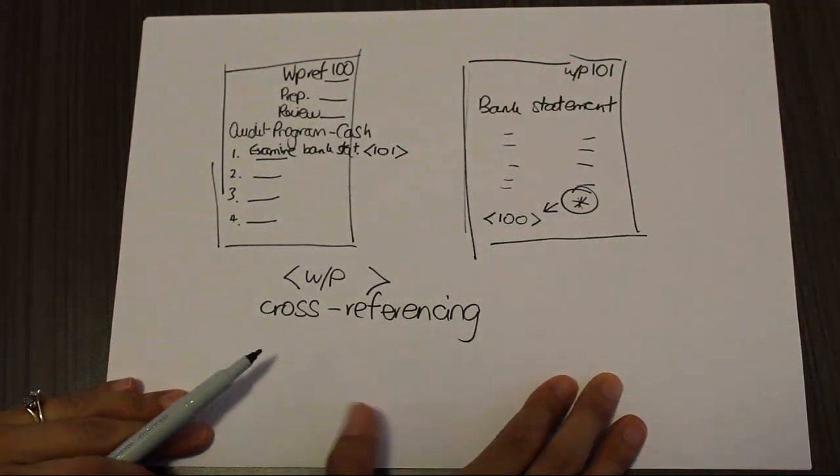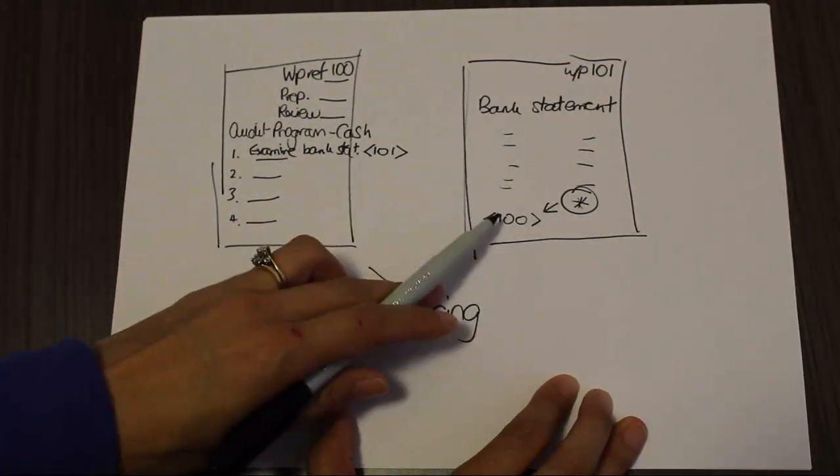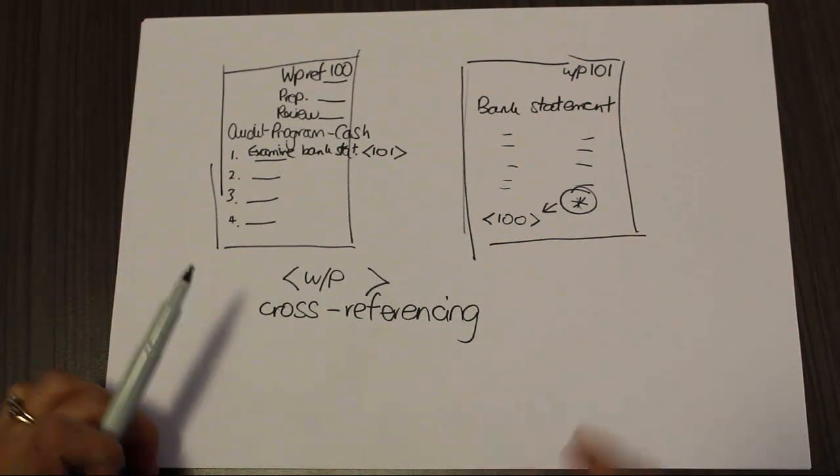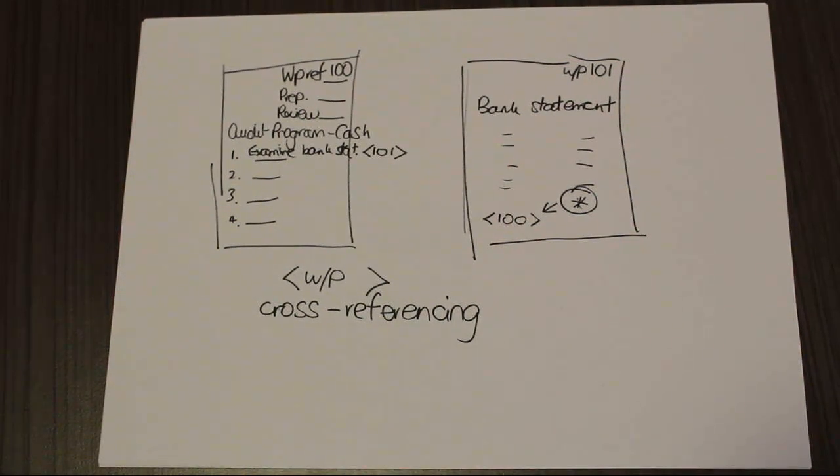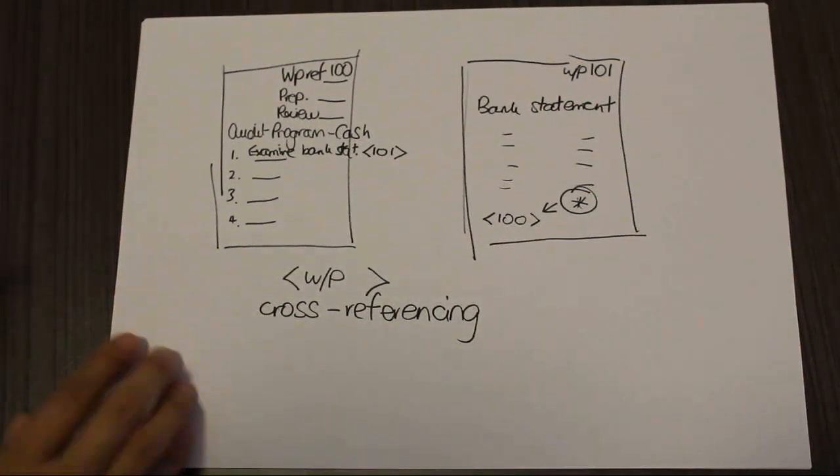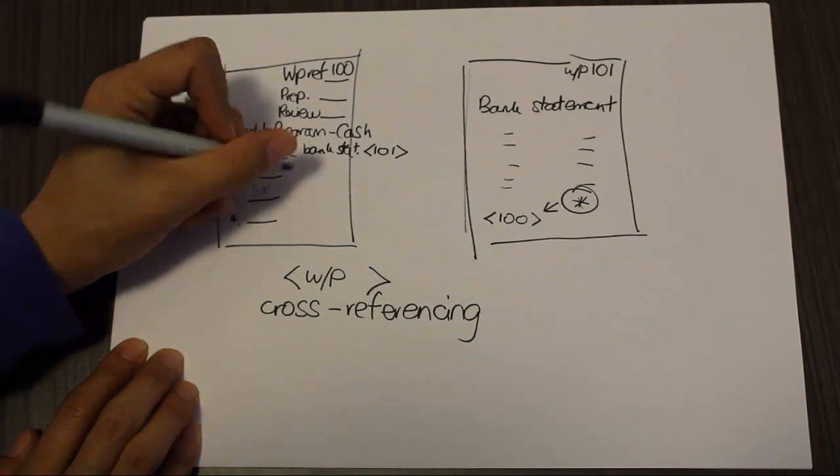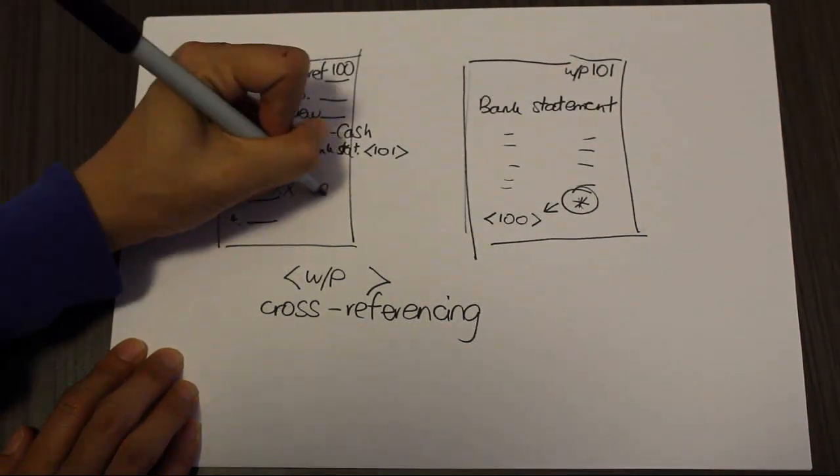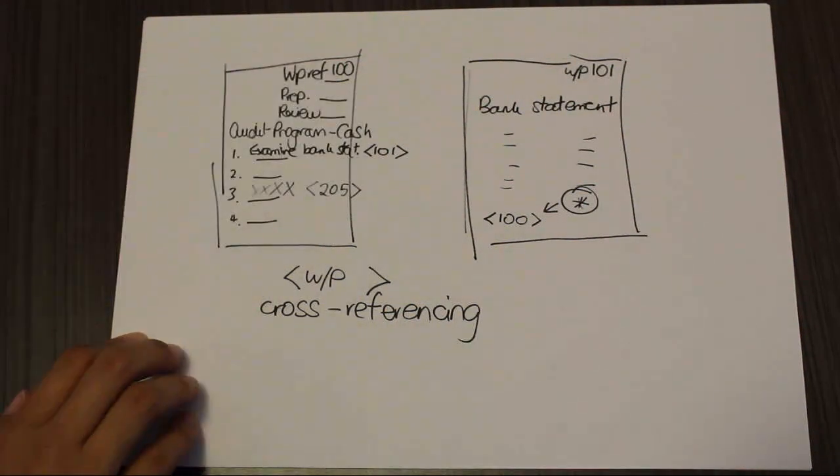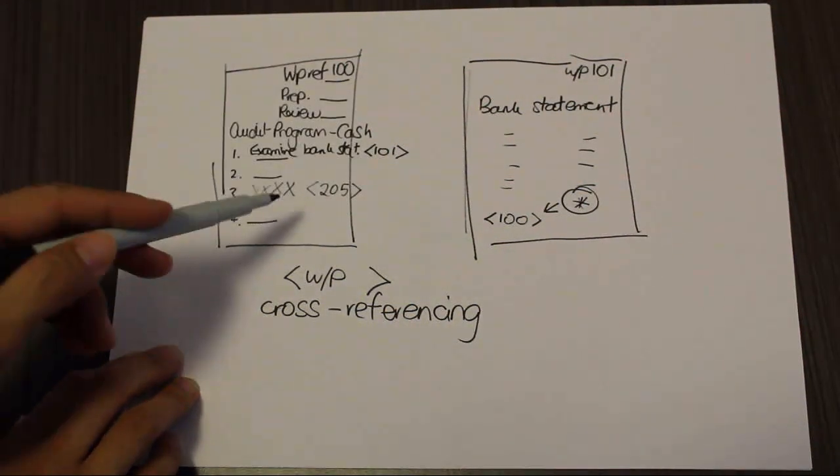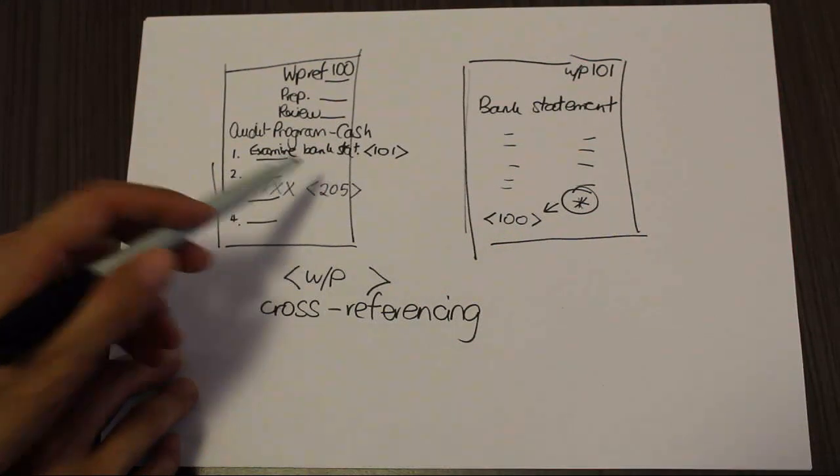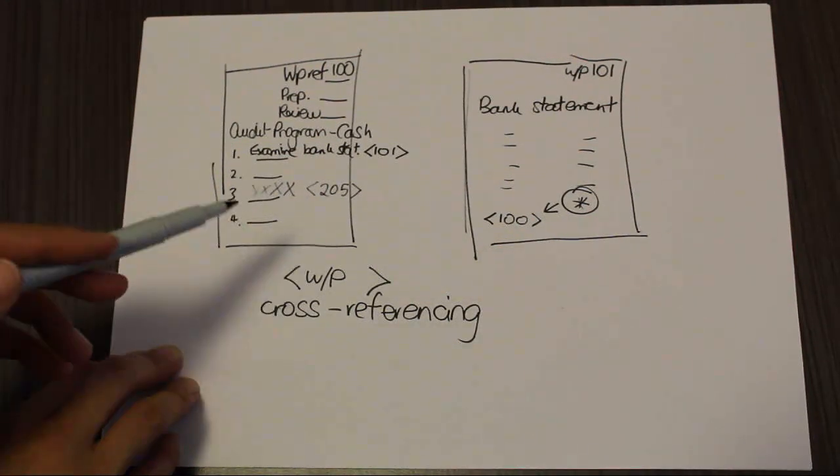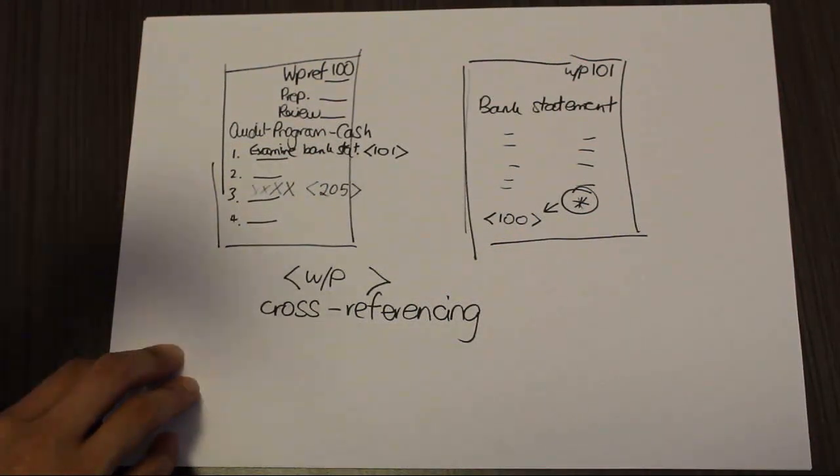This is important in the audit documentation. Now, here we've only got two documents. But what if we had hundreds or thousands of papers? We need to cross-reference so that here for this particular test, the auditor might need to go look at work paper 205. So that allows us to make sure that we can search for the relevant documentation within the audit easily and quickly.